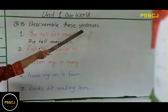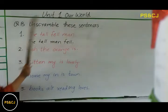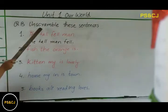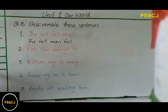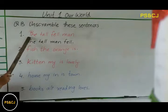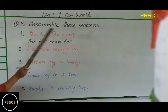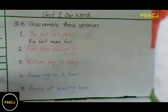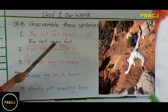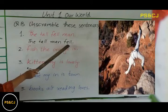Unscramble these sentences. Unscramble ka matlab hai betarteeb jubaloon ko tarteeb deena — it means to arrange jumbled words in order. For example: the tall fell man. We are going to unscramble this sentence to: The tall man fell.